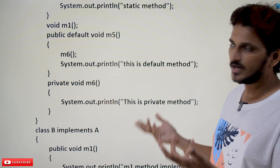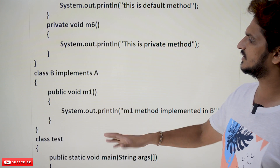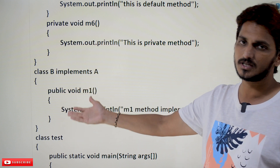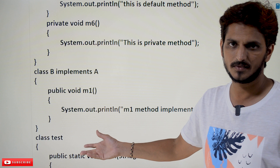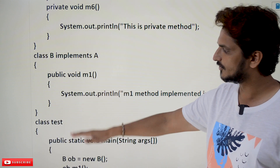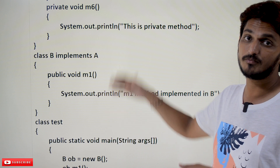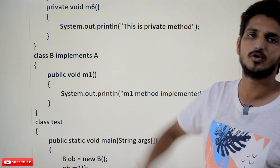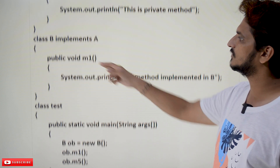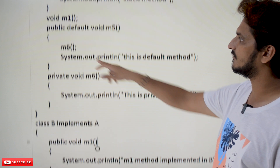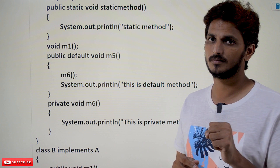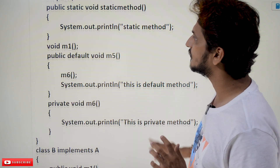So this is how we can use default methods and private methods. The remaining concept is the same as usual. Class B implements A — whether it uses the default method or not is up to the class. If it implements the default method, you write void M5 and write your own logic — it becomes method overriding, and that logic will be executed. In the test class, you create an object and use all the methods you implemented. M1 is accessed, and default methods like M5 are also accessed from the object. But private methods cannot be accessed from outside. These are the concepts you need to understand from interfaces.